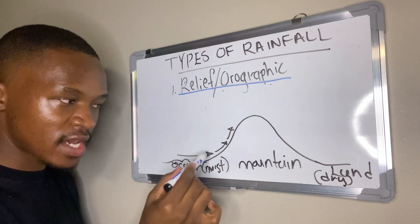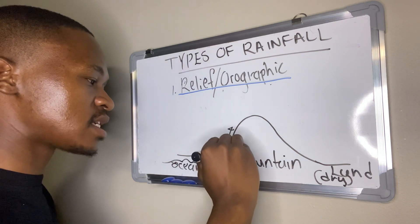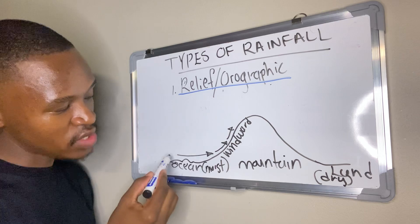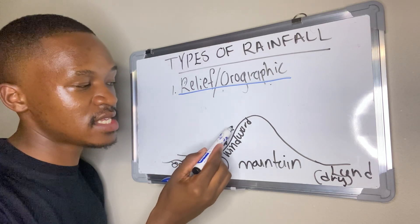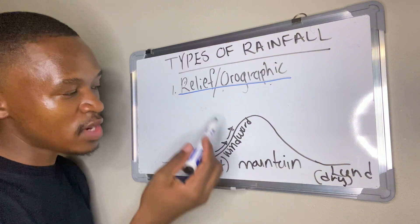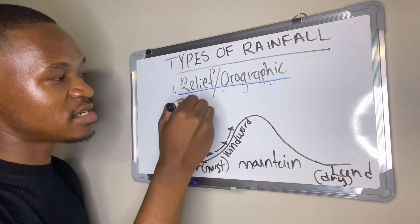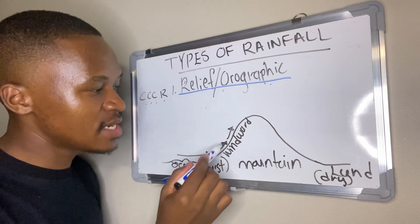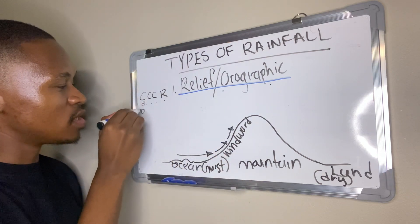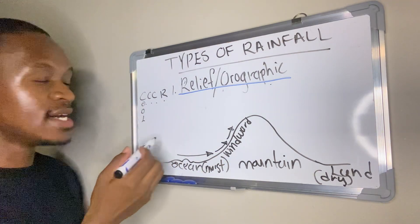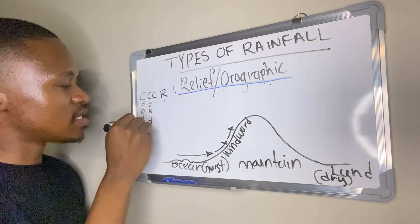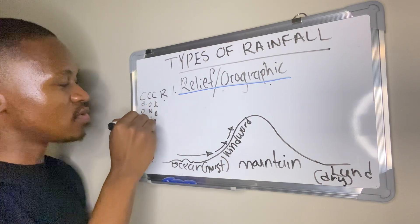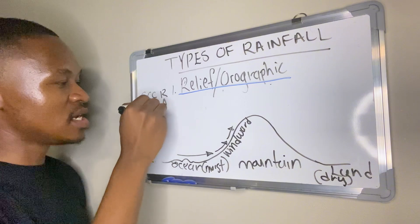This side of the mountain where air rises is known as the windward side. We have moist air from the ocean rising against the windward side of the mountain. Once this moist air rises, we get the Triple C-R process. The first C is for cool, the second C is for condense. So the air cools, condenses, and forms clouds, and then the clouds bring about the rainfall.